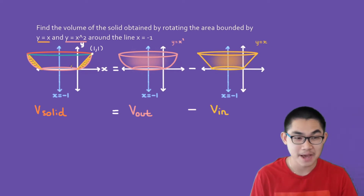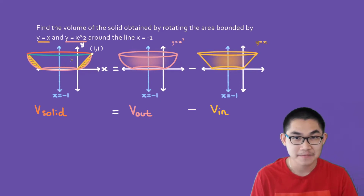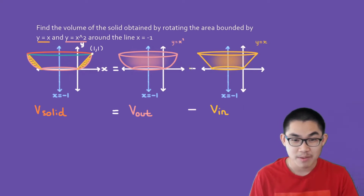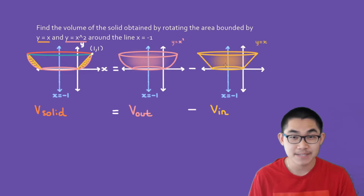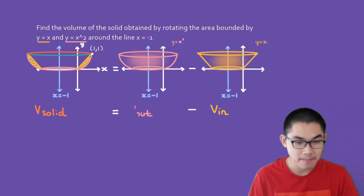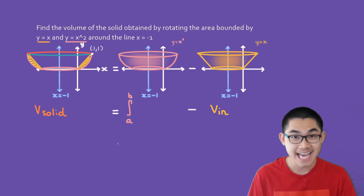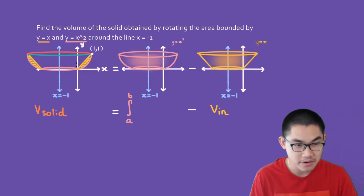If you look at the diagram, when we rotate the area around the curve, we're going to have some empty space inside. To get rid of that empty space, we find the volume of the outside function, which is y equals x squared, and subtract the volume of the inner function. The formula is the integral from 0 to 1 — from here to here — of A(y) dy.